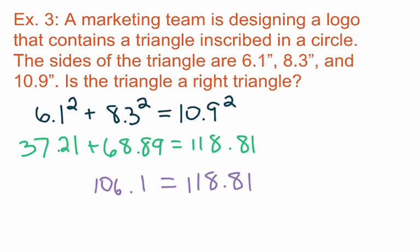Well, we can see that those two are not equal to each other. So that would tell us that this is not a right triangle. So because these numbers are not equal to each other, this is not going to be a right triangle.